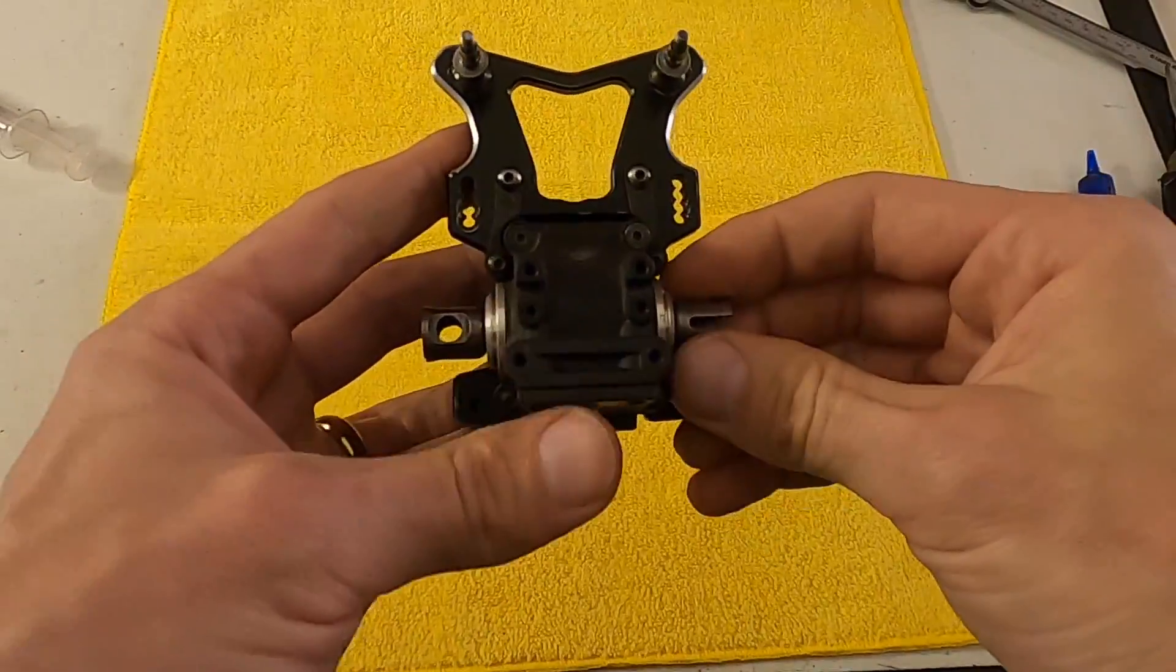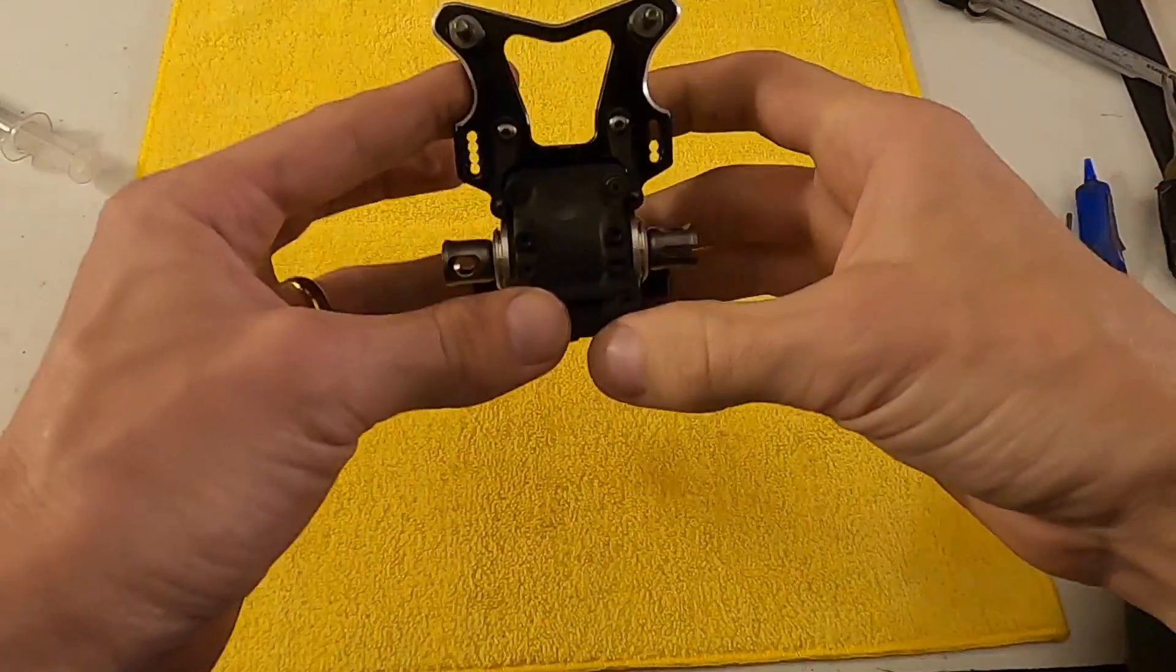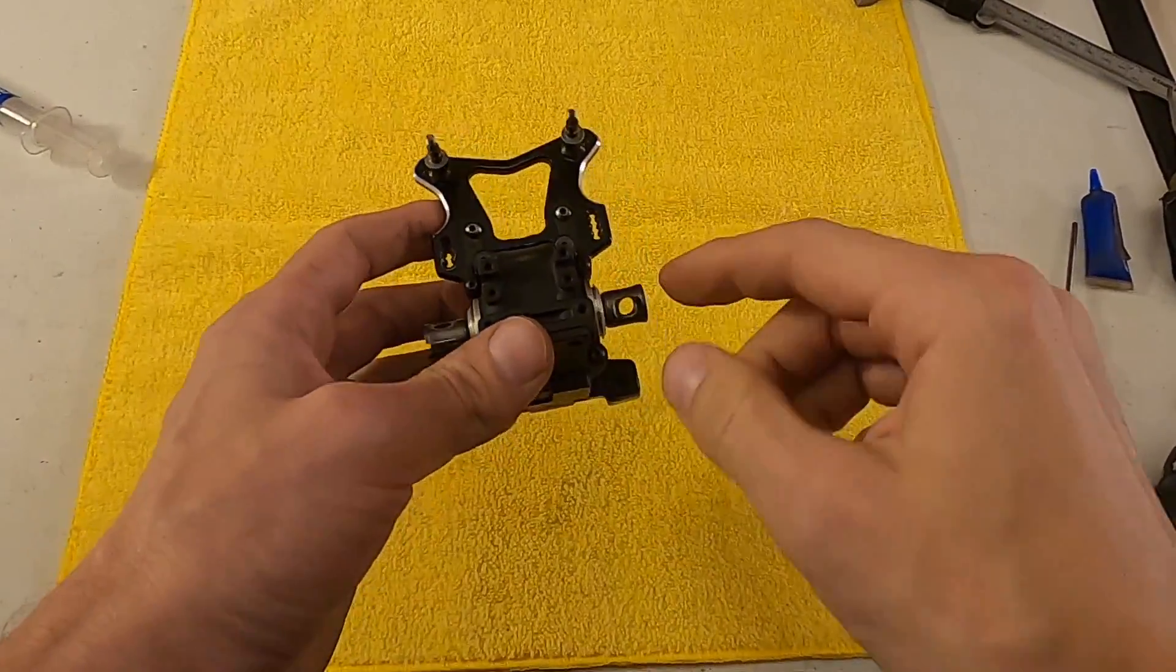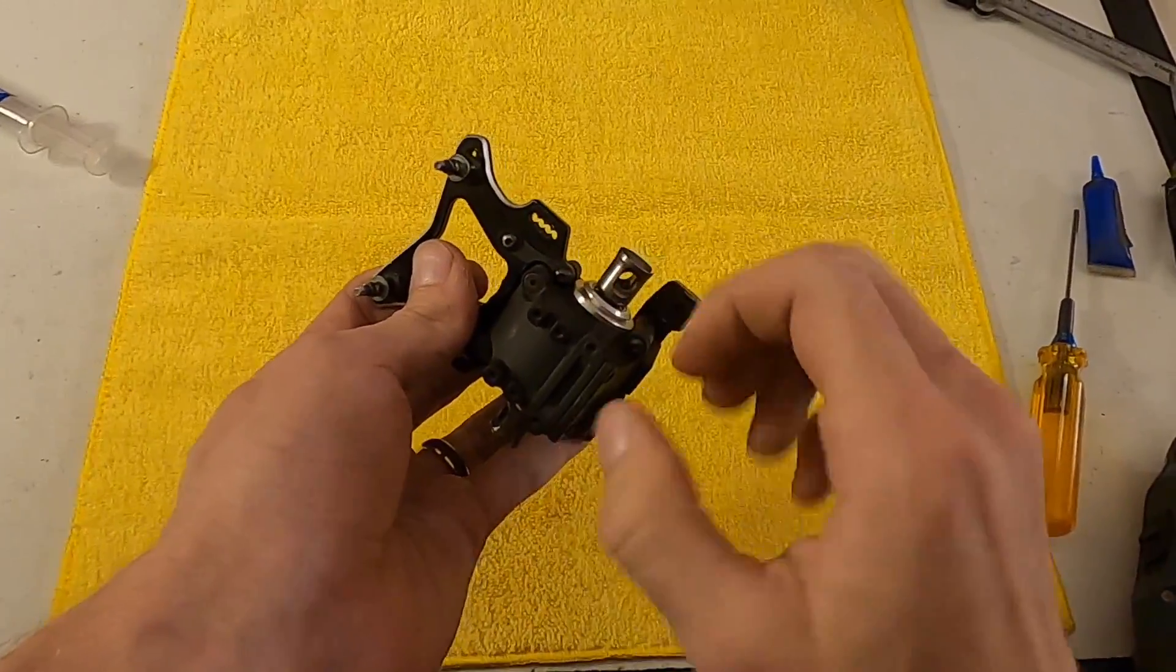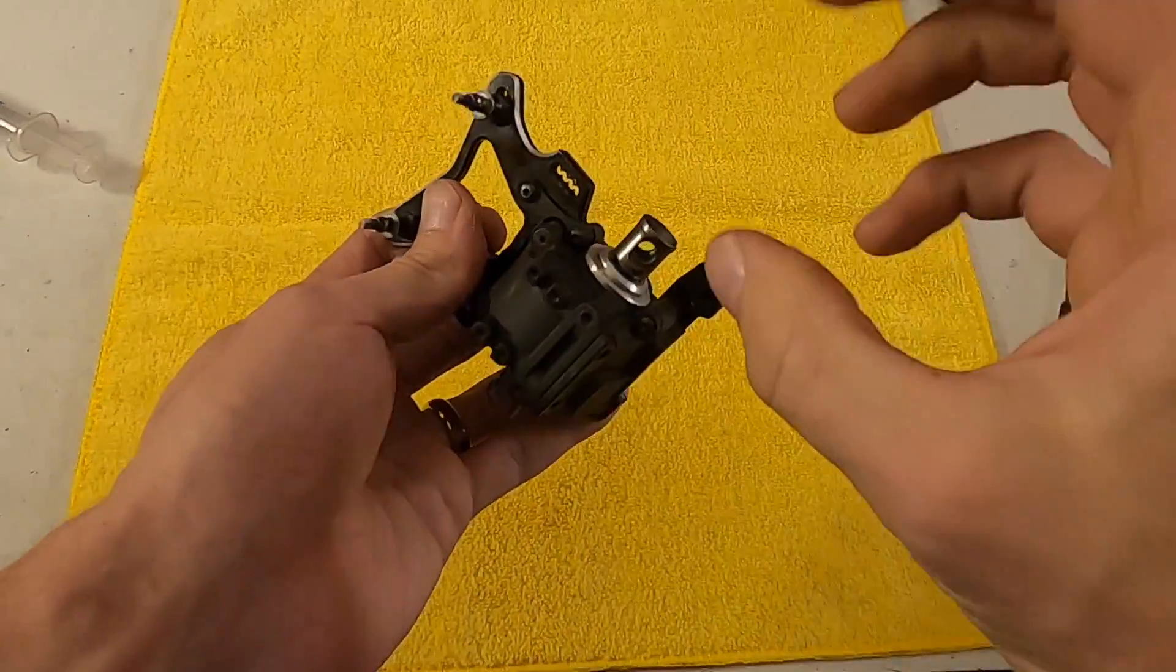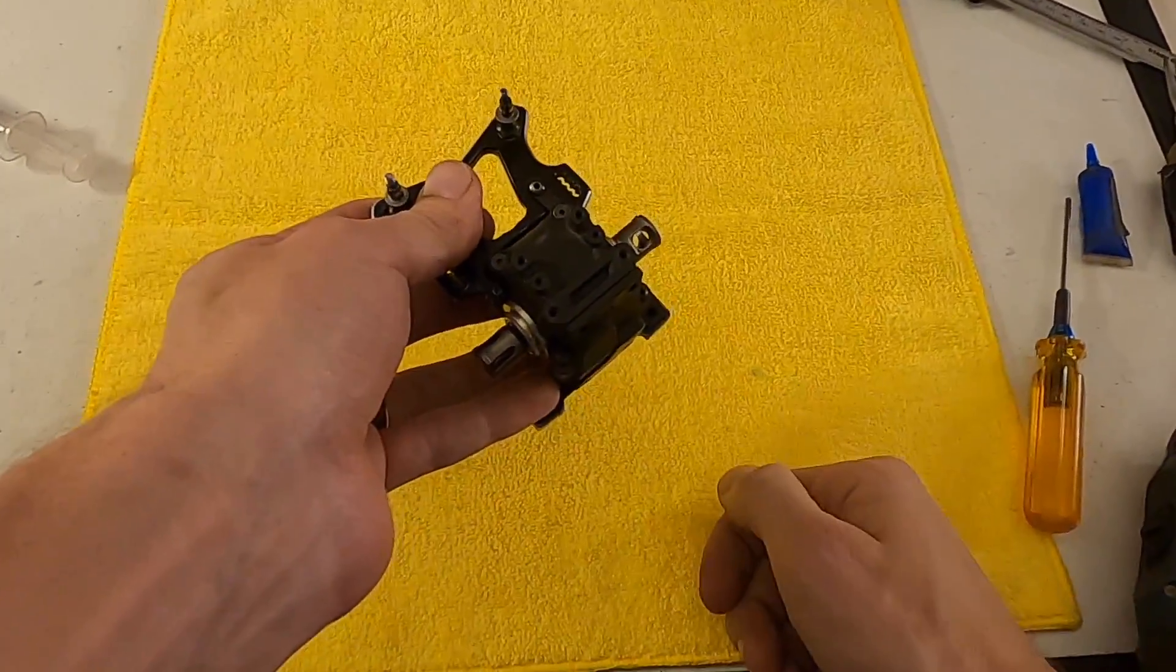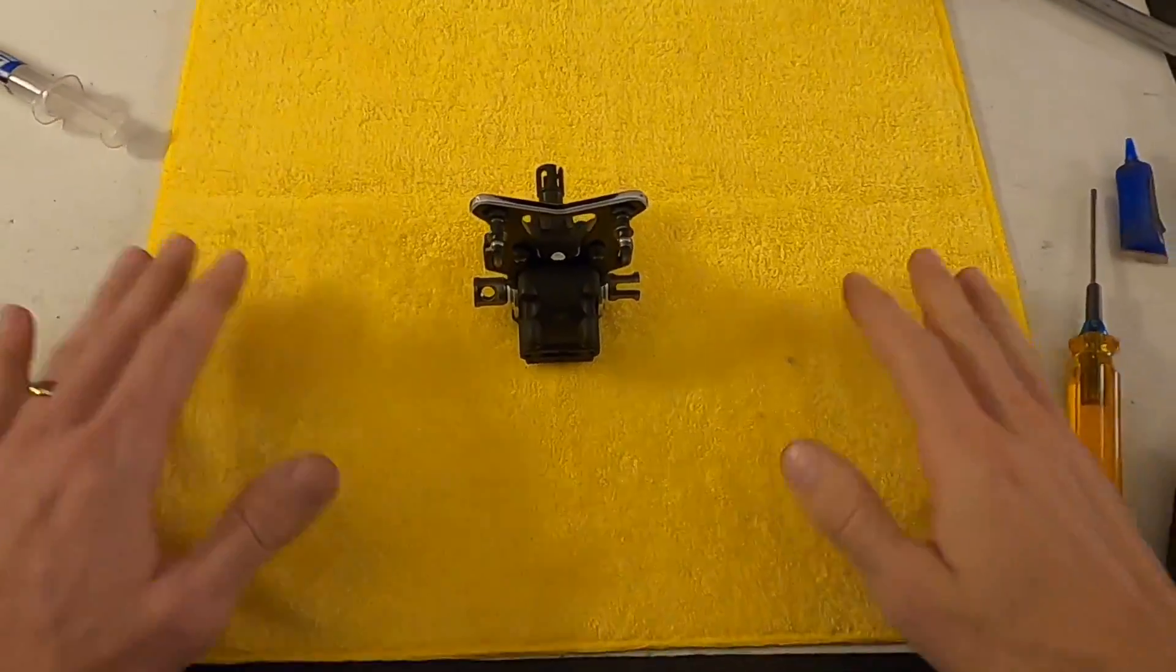Hopefully that helps you guys in learning how to shim your differentials. Obviously, the Gamma 319 makes it a lot easier than other cars. You're not trying to get those shims and keep them from falling out as you push the cases together. This diff holder is really nice. The double bearings make it super durable because there's less flex in this assembly. So really something to look forward to, guys. Thanks for watching. Come back for more videos. Bye bye.